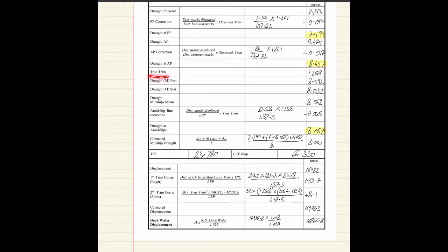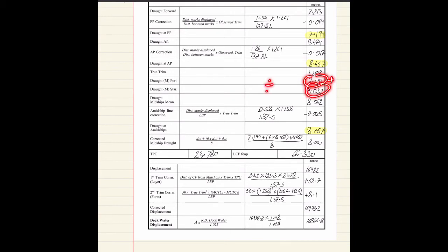True trim is the difference between the corrected forward perpendicular draft and the corrected aft perpendicular draft, giving 1.258 meters. The midship port draft is 8.092 meters and starboard is 8.032 meters, both given in the question. These are meaned by adding both values and dividing by two, giving 8.062 meters.